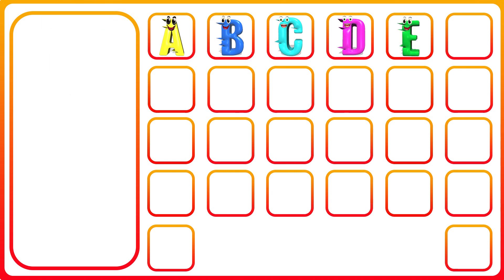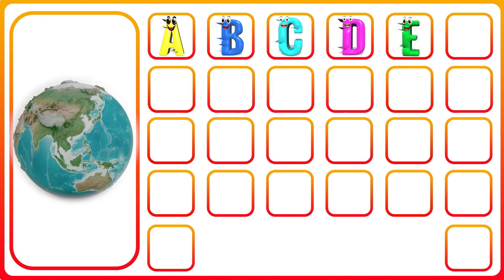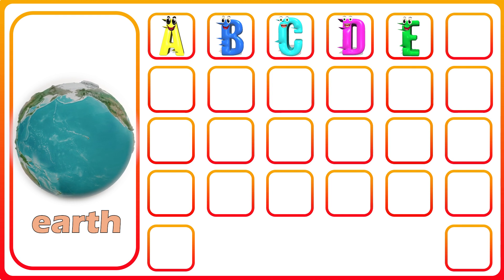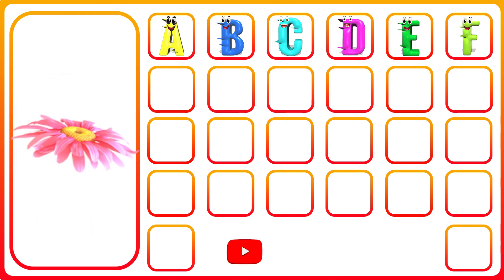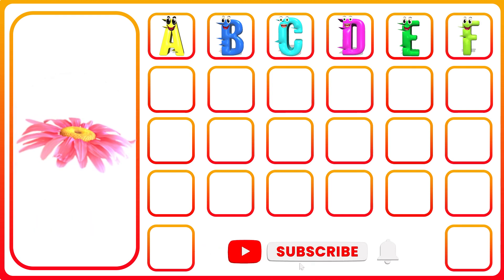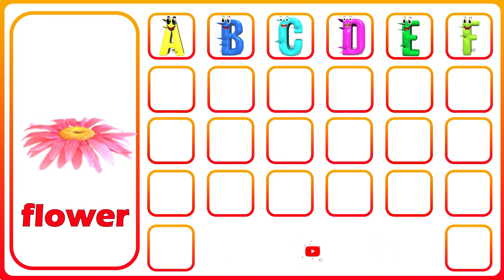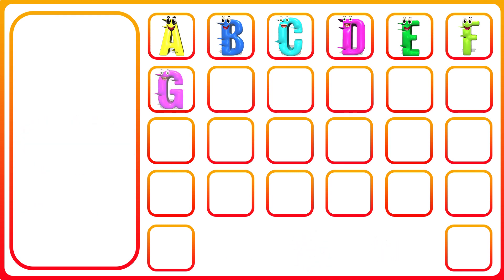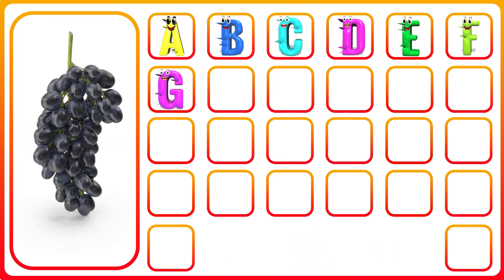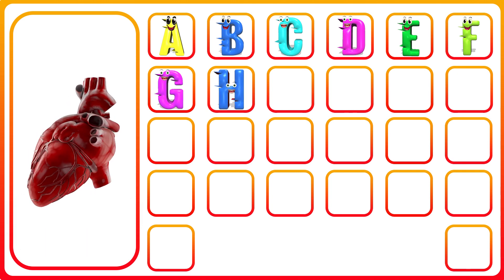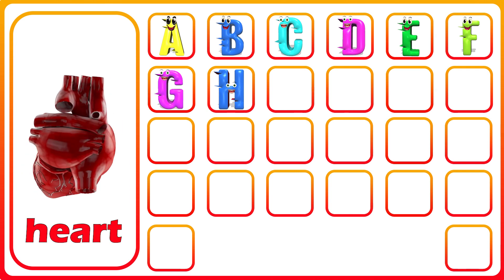E. E for earth. F. F for flower. G. G for grapes. H. H for heart.